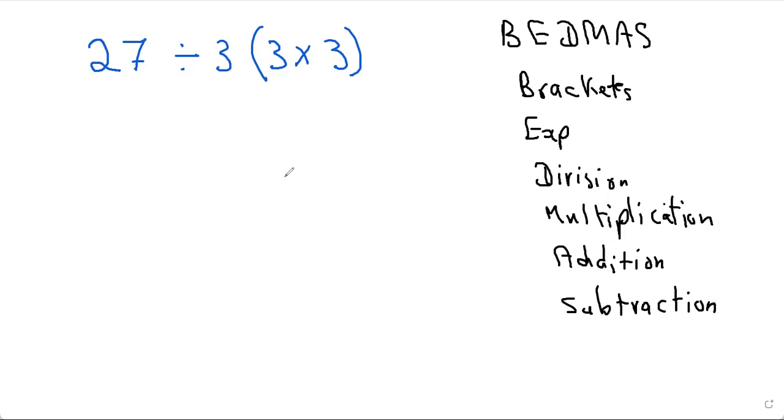So with this question right here, if we look at it, we know we have to do brackets first and we're going to get 27 divided by 3, and inside the brackets, which we have to do first, we get 9. But now the confusion for a lot of students: does this give me 1 or does it give me 81?